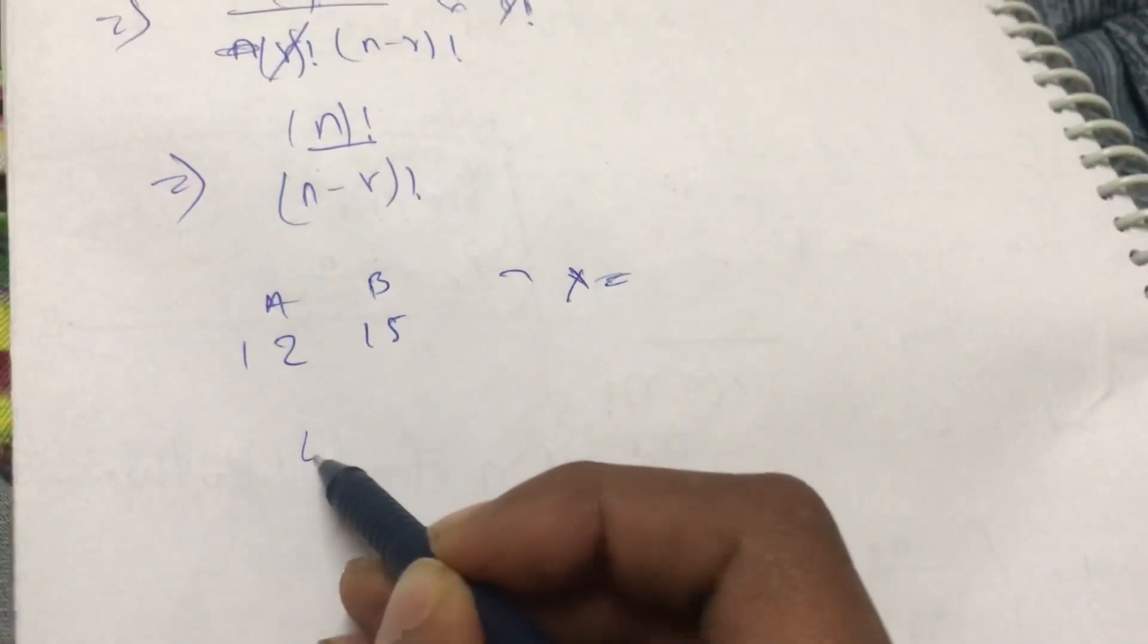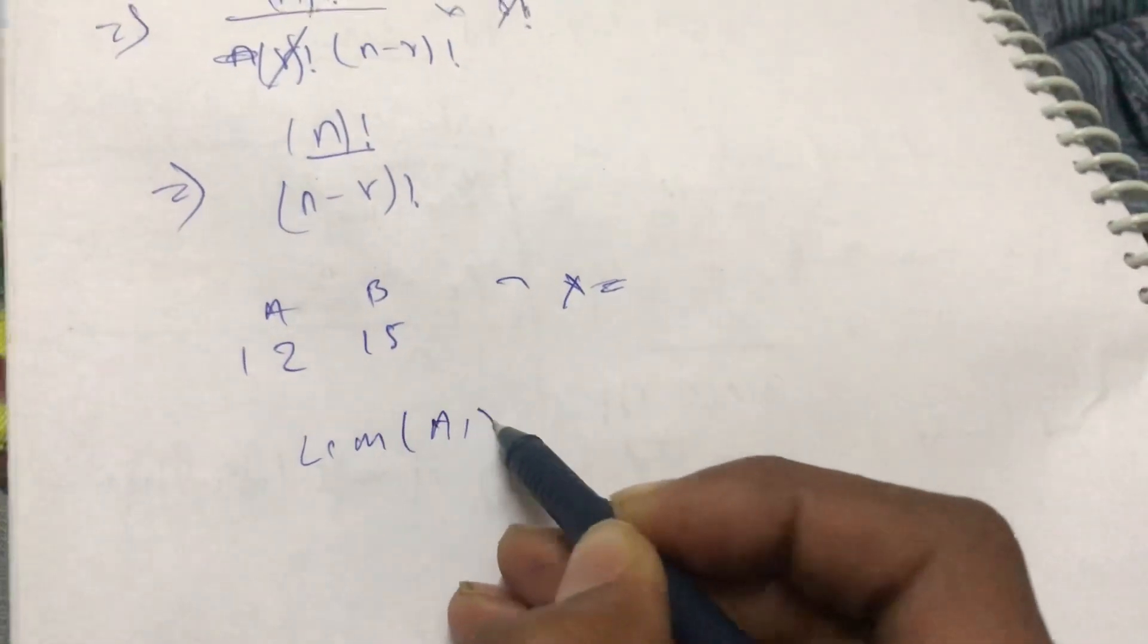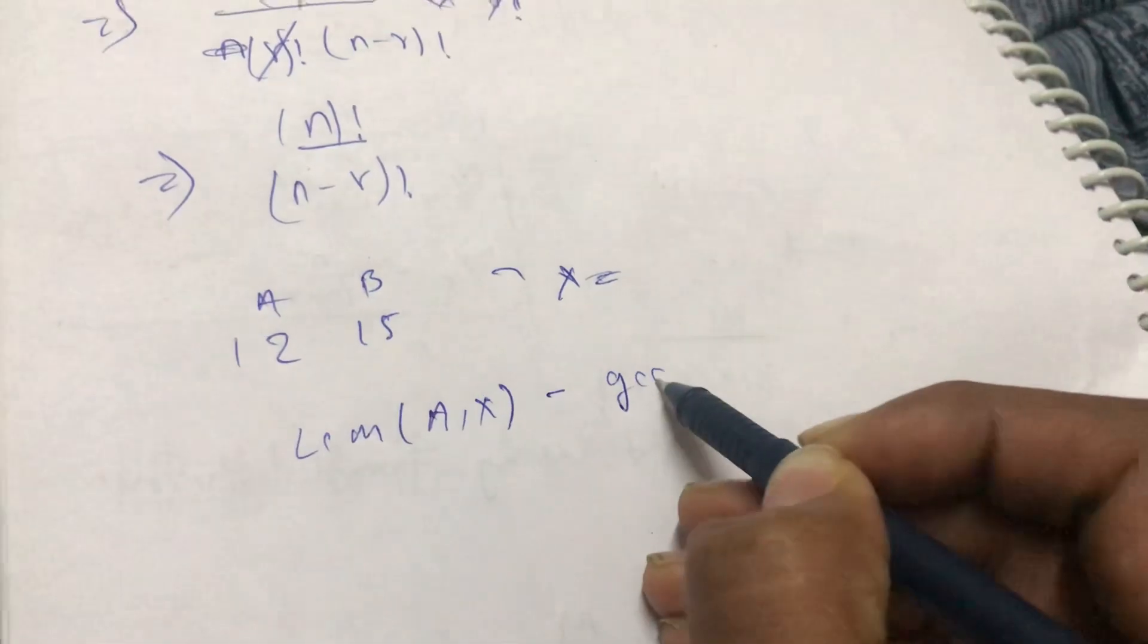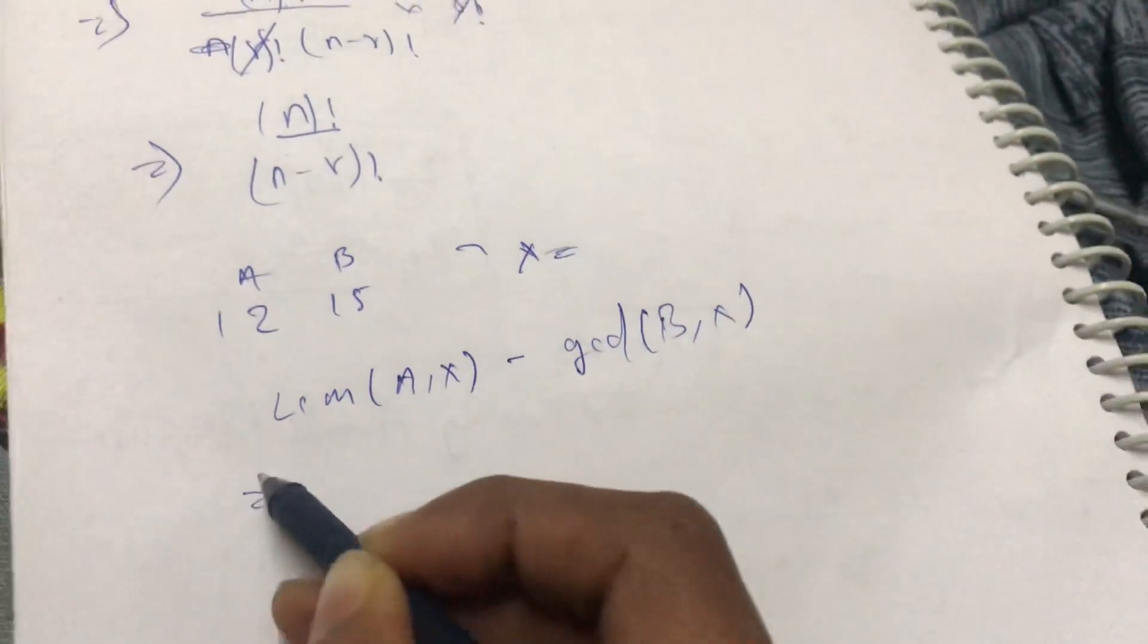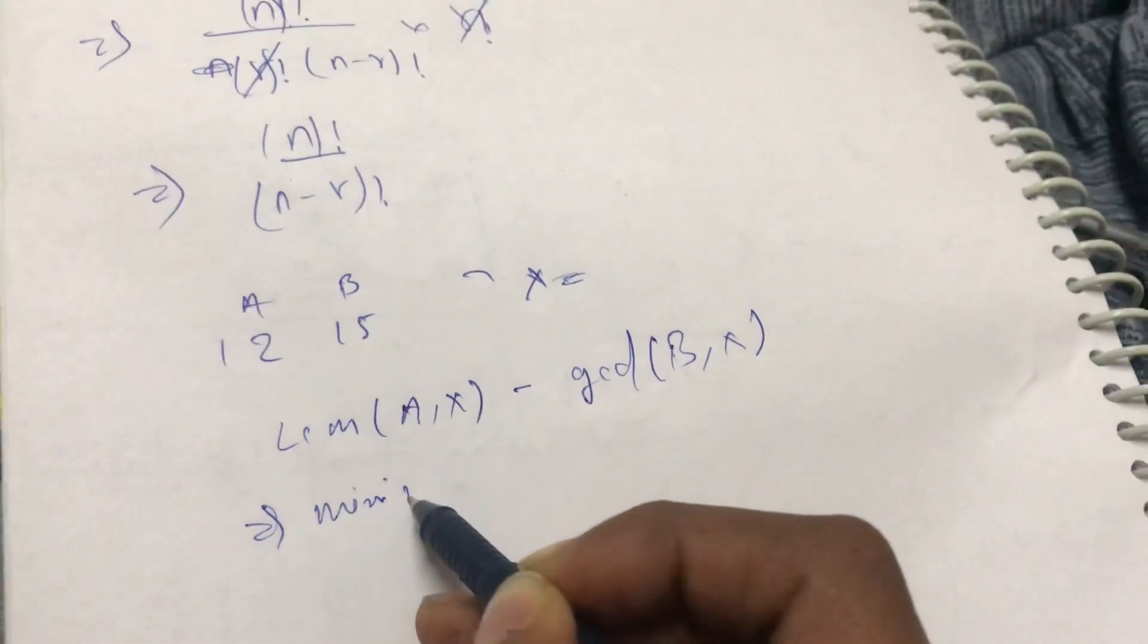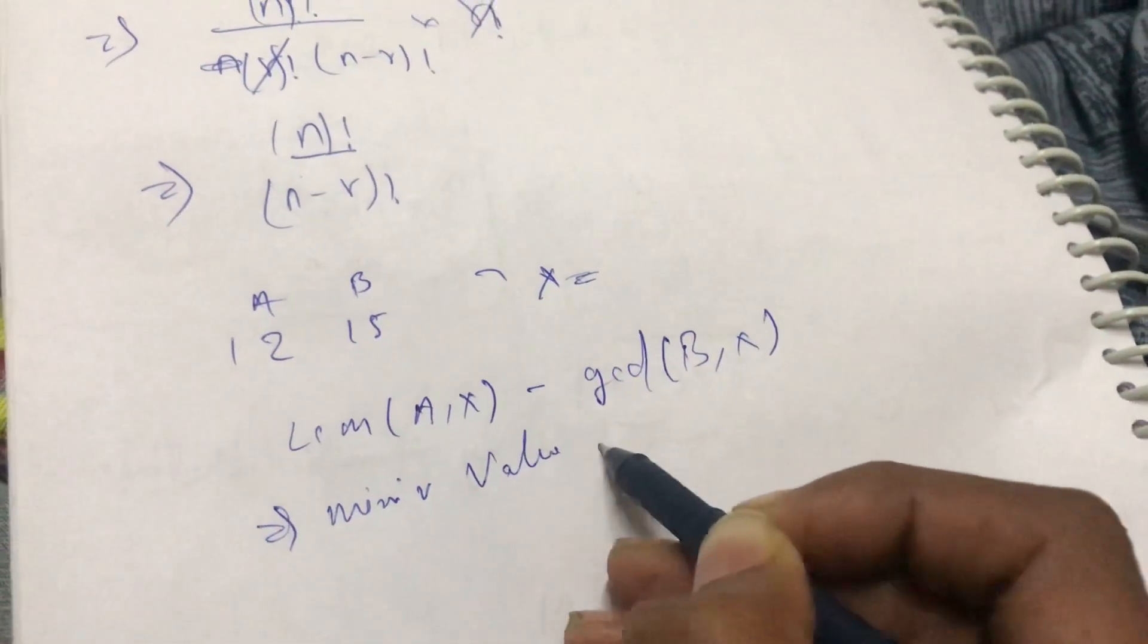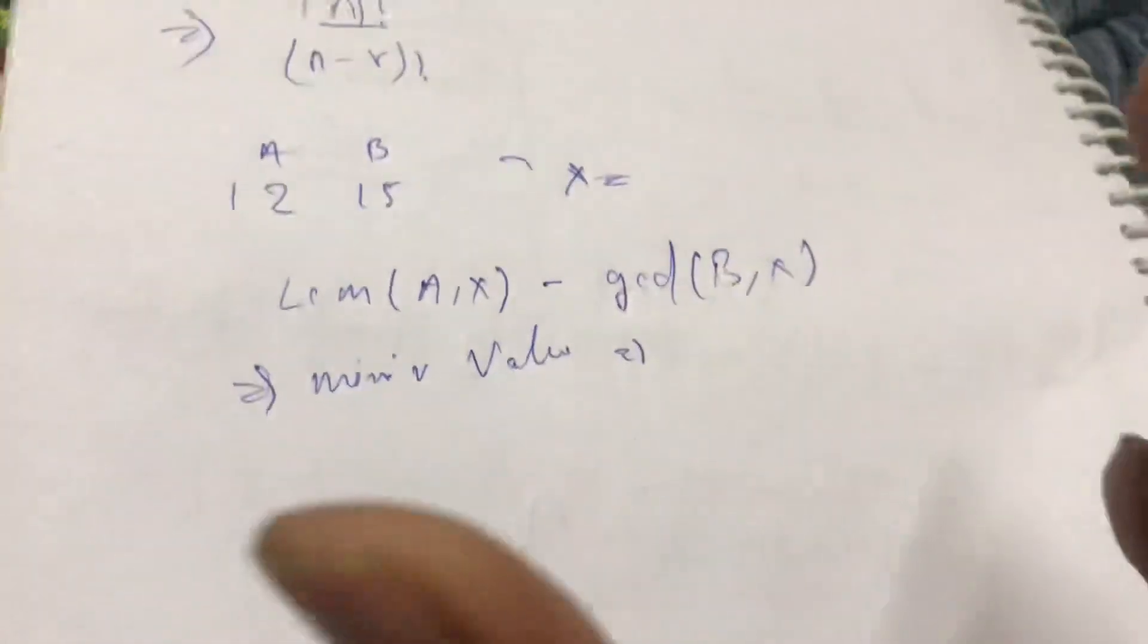Which by if you take LCM(A, X) minus GCD(B, X), then it should give us the minimum value.